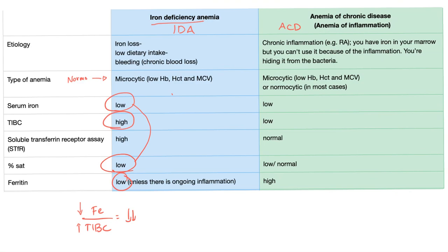The soluble transferrin receptor assay is usually high in iron deficiency anemia. This is a huge difference between iron deficiency anemia and anemia of chronic disease, because the soluble transferrin receptor assay is normal in anemia of chronic disease.